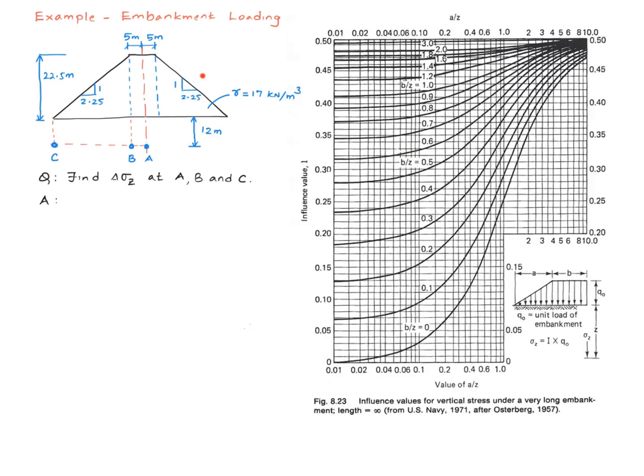So here we have an embankment that is basically like a homogeneous earth dam. The density of the material is 17 kilonewtons per meter cubed, and the height of the embankment is 22.5 meters. The embankment is symmetric about the center line. The slope over here is one vertical to 2.25 horizontal, and this downstream side also has the same slope.